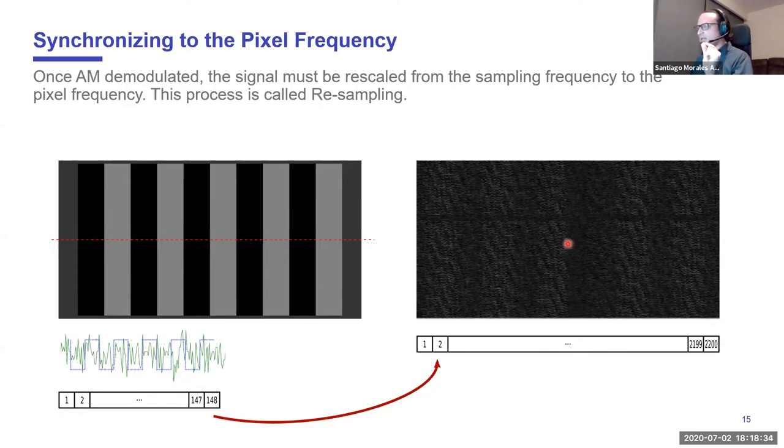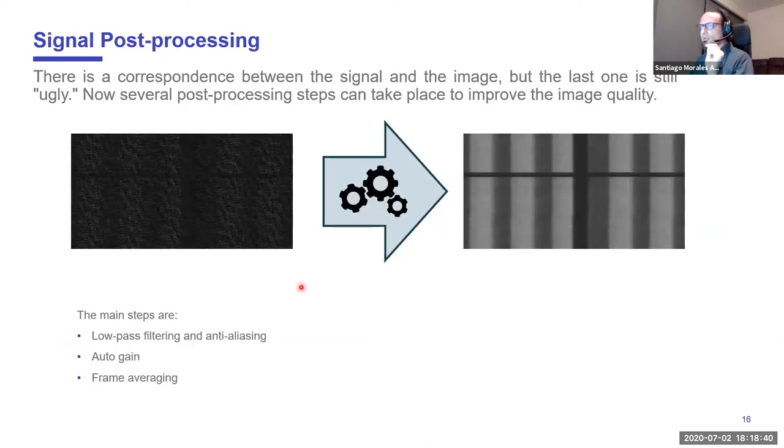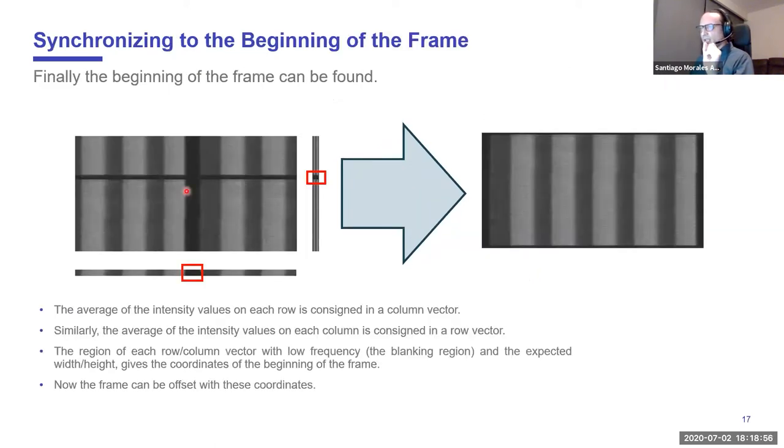Here you can see after the resampling process, we can see that there is something there, but it is very ugly. It is terrible. So how do we improve this? We use a series of post-processing steps where, for example, we use low pass filtering, auto gain, frame averaging, and we go from this to this, which is a lot better. At this point, the frame is still not synchronized because it is not organized. We have to find this point, and after finding this point, we reorganize the information and start to display the data at the beginning of this point.